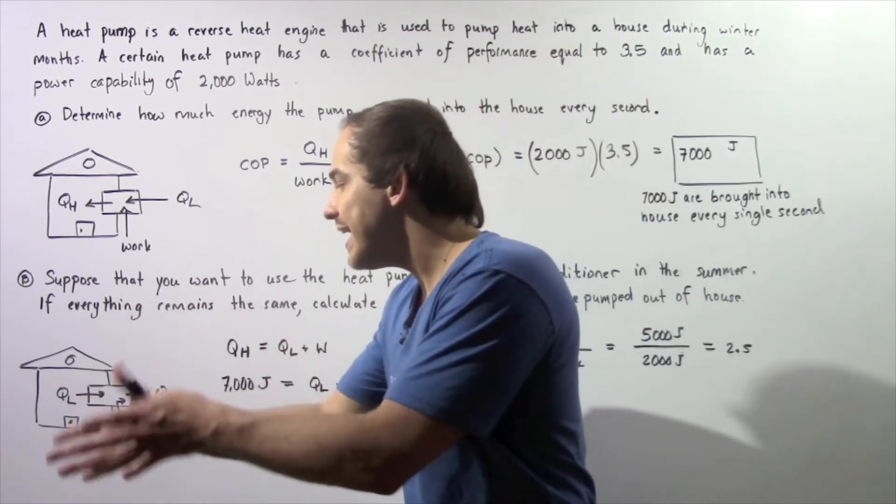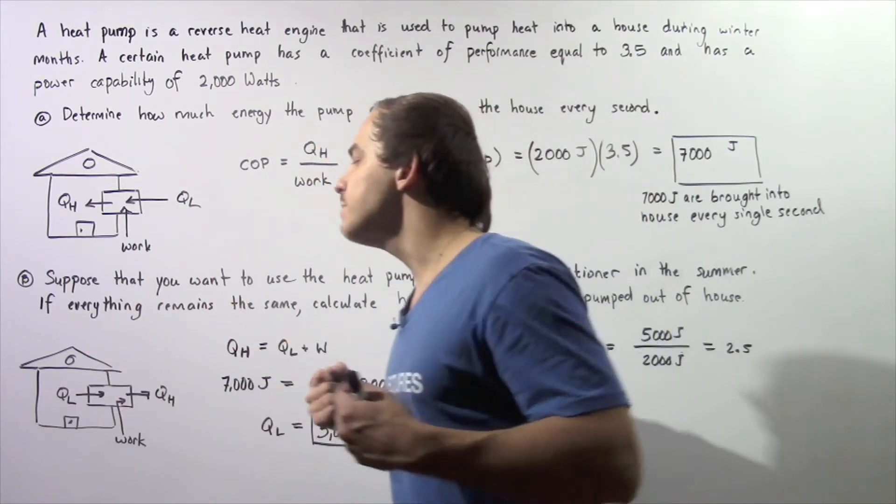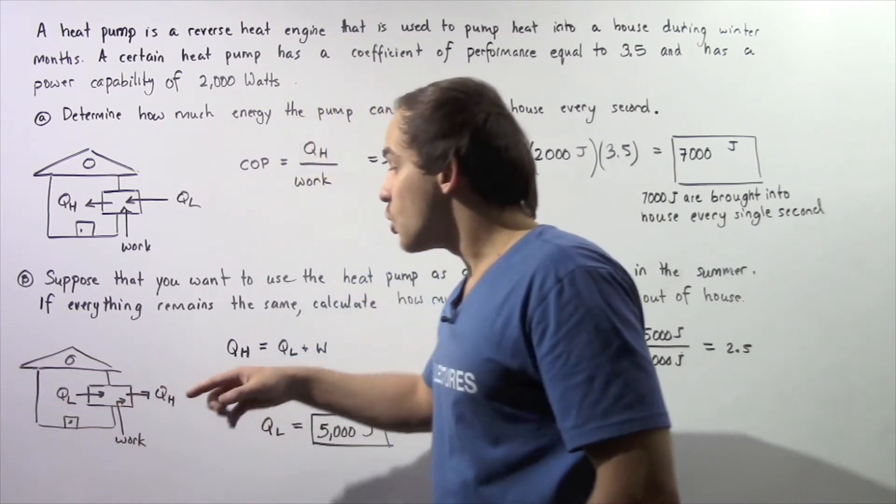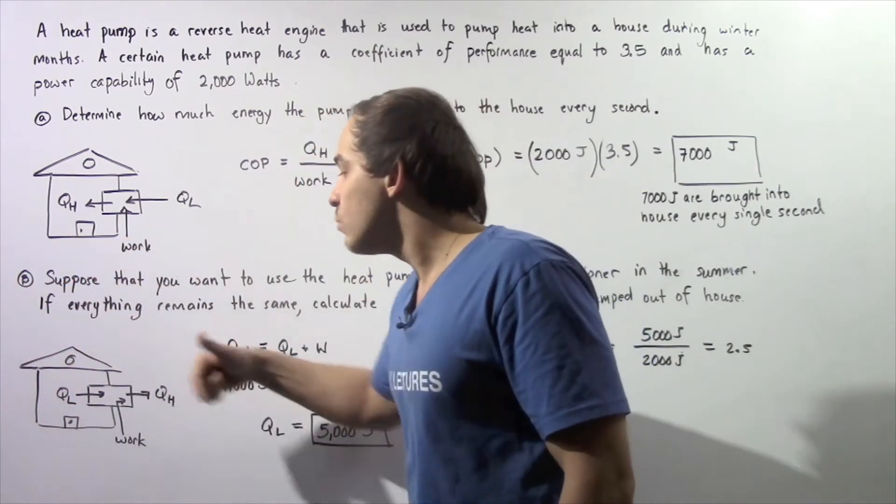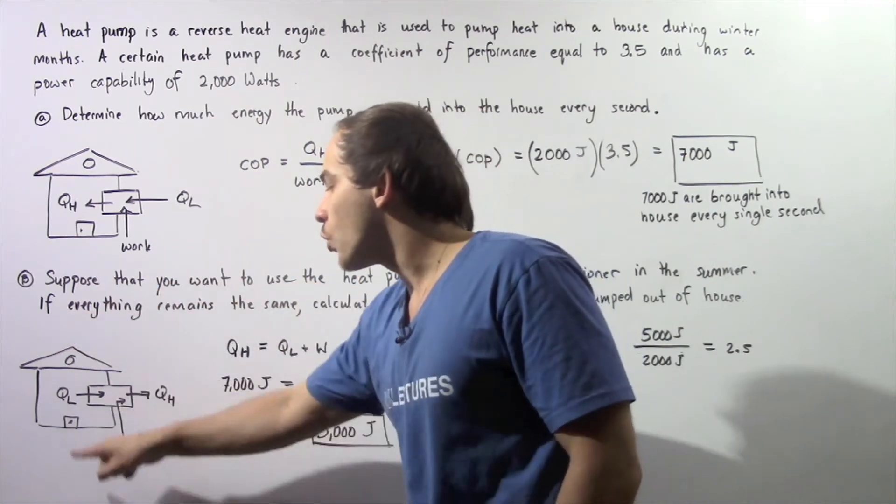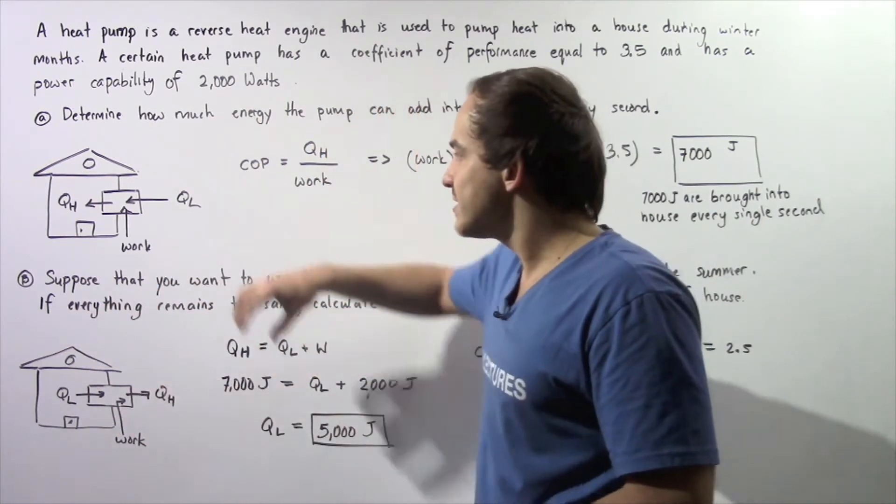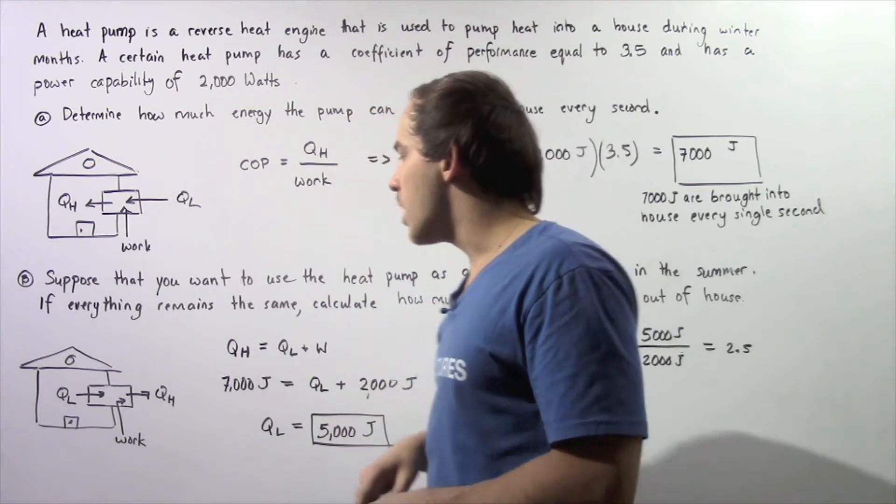Now our heat pump, which acts as an air conditioner, takes the energy from the inside of the house and pumps it outside. So our heat flows from the inside to the outside, and when the heat flows, work must be done. We're essentially reversing this process.